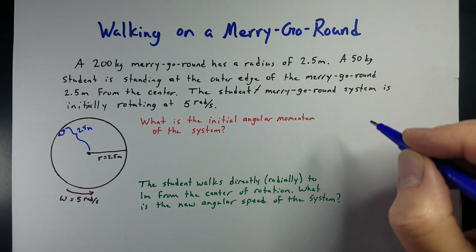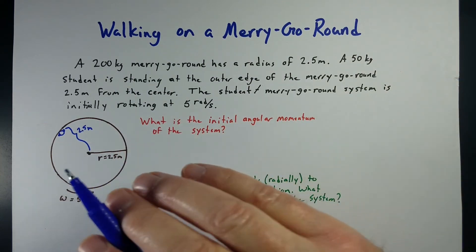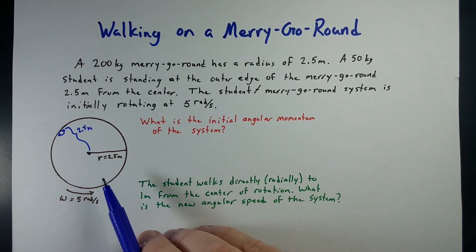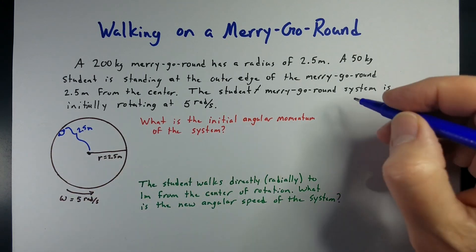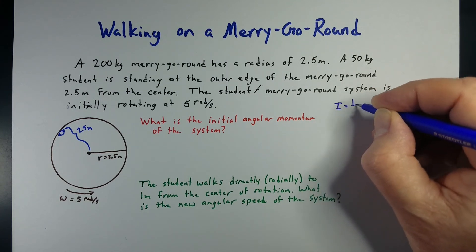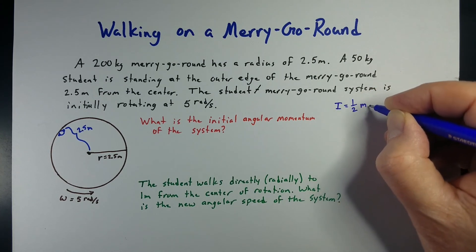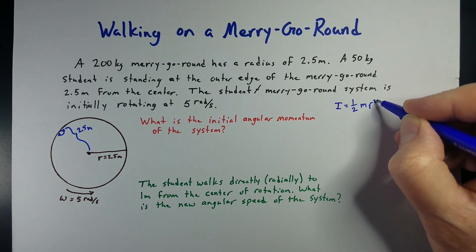The first thing we need to do is figure out the moment of inertia of our system. We actually have two moments of inertia, one from the merry-go-round itself and one from the student. So, the merry-go-round, we can model it as a disk, which the moment of inertia is one-half m r squared, where m is the mass and r is the radius of the merry-go-round.